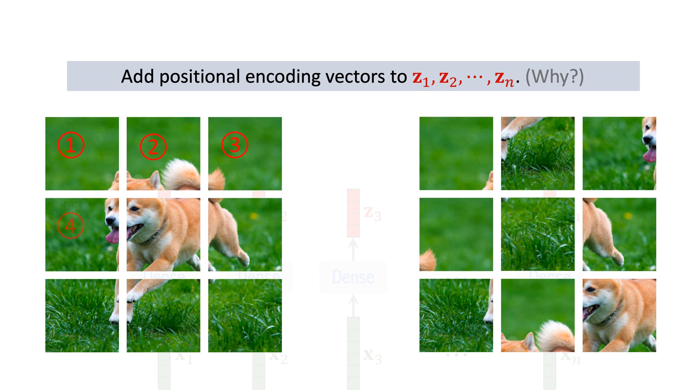So we assign positional information to the patches and add positional encoding to the z vectors. In this way, if two patches are swapped, their positional encoding will change, and therefore the output of transformer will be different.